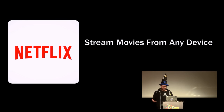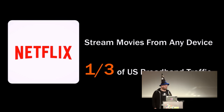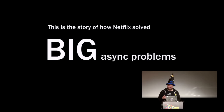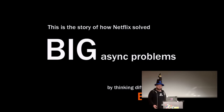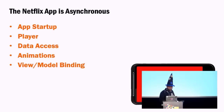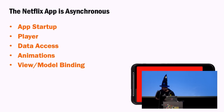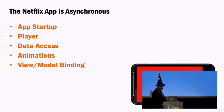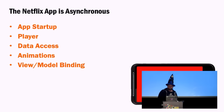Let's bring it back to Netflix. Netflix streams movies and TV shows from any device and accounts for one-third of all U.S. broadband traffic. They had some really big problems to solve, because each language had its own way of talking about asynchronous stuff. Everything about the Netflix application is asynchronous — whether it's your app startup, the player, data access, animations, or view model bindings.